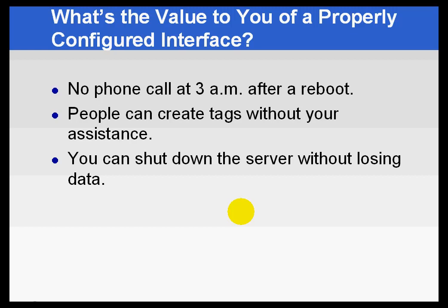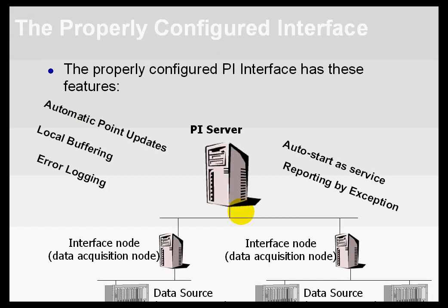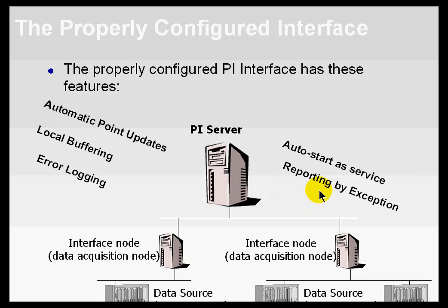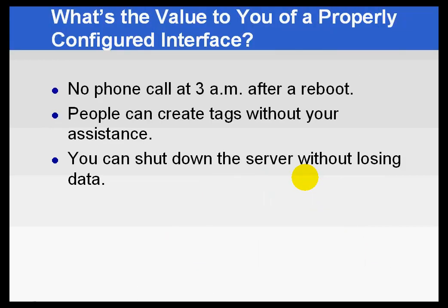If the PI Server is shut down for whatever reason, it will automatically buffer data locally — that's the shutdown or disconnect scenario. This means you can deliberately do a graceful shutdown of the server and these interface nodes will buffer data while that shutdown is occurring. When we first implemented that feature, it was a great boon to system managers because all of a sudden they didn't have to come in on nights and weekends to upgrade the PI Server. Previously, that would be the only time management would allow upgrades, because people were depending on the data and didn't want to lose it during an upgrade.